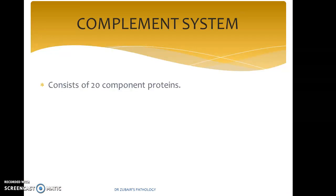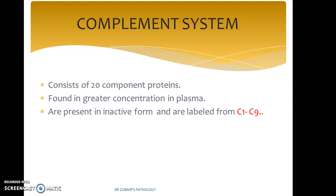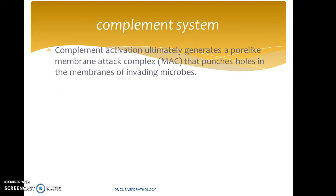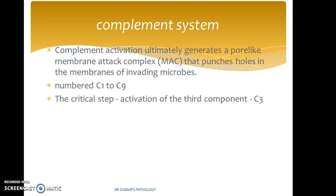Coming to the complement system: complements consist of 20 component proteins. They are found in greater concentration in plasma and are present in inactive form, labeled from C1 to C9. The ultimate aim of complements is to generate a pore-like membrane attack complex that punches holes in the membranes of invading microbes — I would compare them to minute drilling machines — thereby destroying the integrity of the cell.